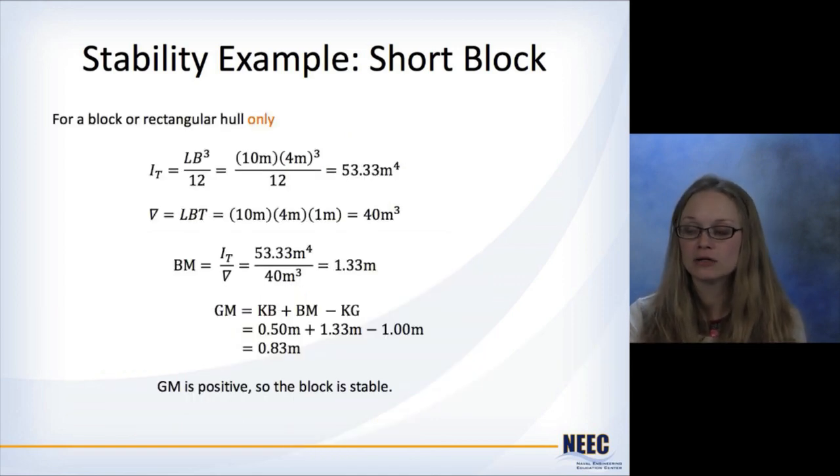For this rectangular hull, we can actually calculate the inertia of the water plane area. In this case, it's the length of the block times the beam cubed divided by 12. So you calculate this, you get the inertia is 53.33 meters to the fourth. The underwater volume is just the length times the beam times the draft. So in this case, it's 40 meters cubed. BM is just the inertia divided by the underwater volume. So we get 1.33 meters.